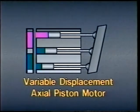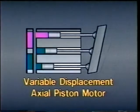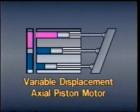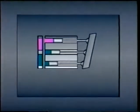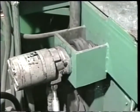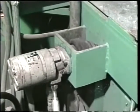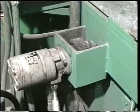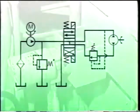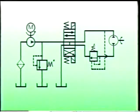When torque must be regulated at different speeds, a variable displacement piston motor can be used. Increasing the angle of the swash plate increases the displacement and the torque, while decreasing the angle decreases the displacement and the torque. In addition to regulating the speed and torque of motors, it is often necessary to slow down a motor and its load. Sometimes a motor is simply allowed to coast to a stop, and sometimes mechanical brakes are used, but hydraulic motors can also be dynamically braked.